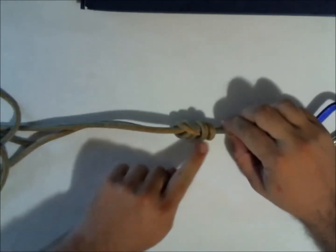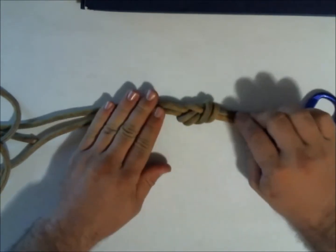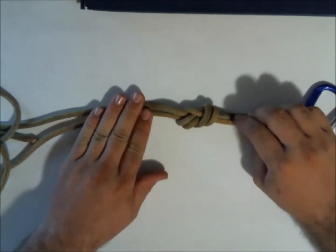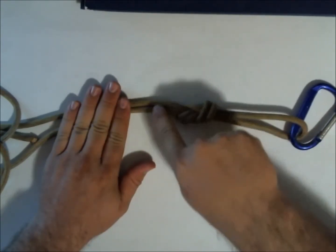To check to see if it's right, I make sure that everything is parallel and there's nothing crossing over. And then I should have five strands, or five sets of two, from one side to the other: one, two, three, four, five.